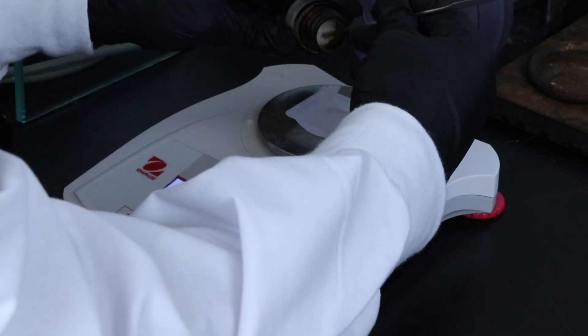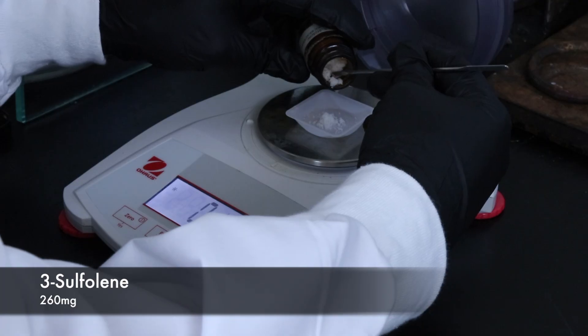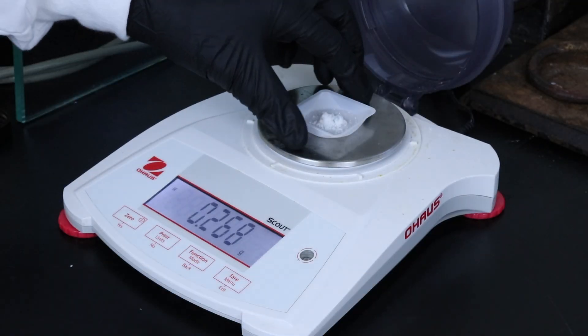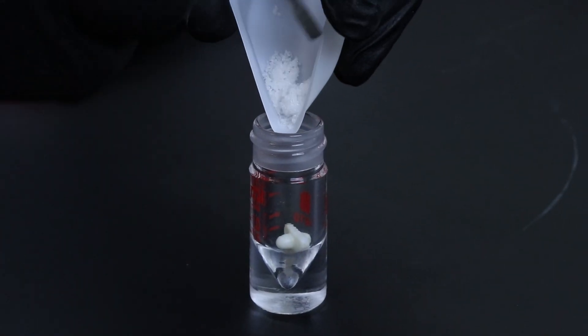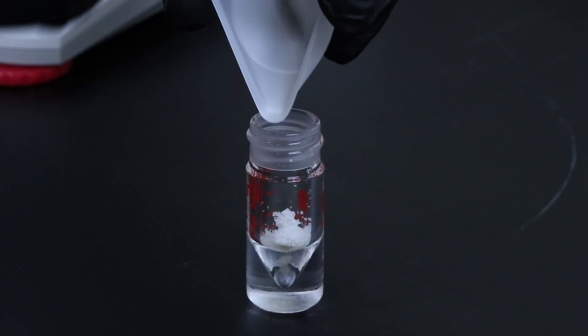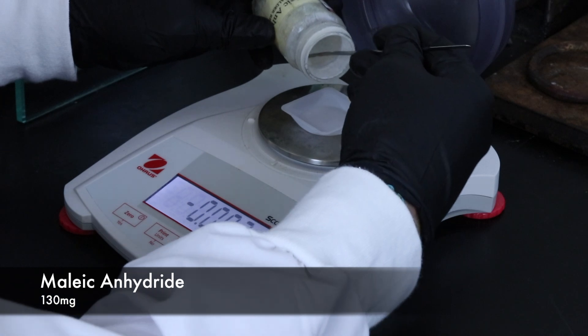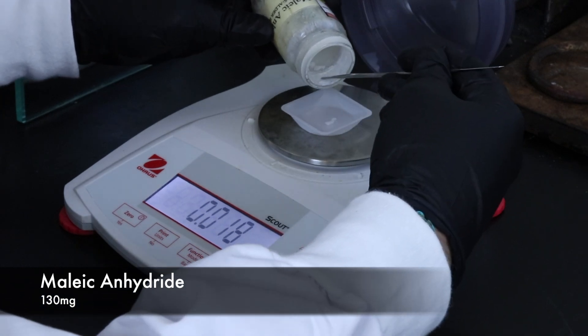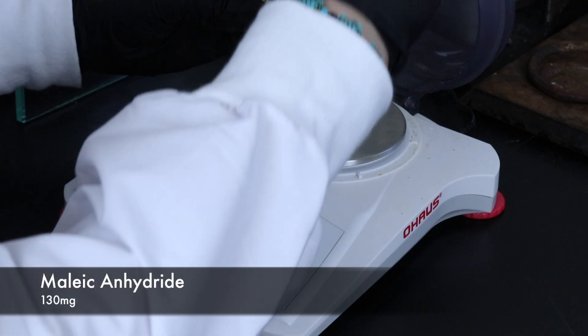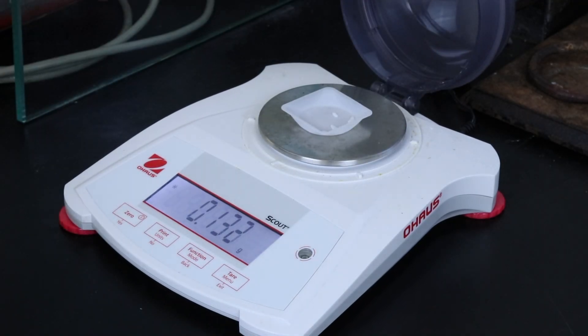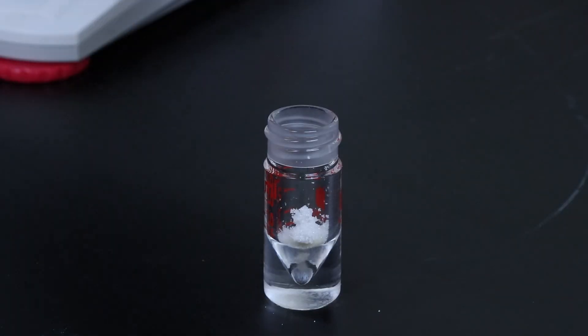I'll start by adding all of the reagents. So I'll measure about 260 milligrams of 3-sulfolene and add that to a 3 milliliter conical vial with a large spin vane. Then I can weigh out 130 milligrams of the maleic anhydride which was a little clumpy so it was kind of hard to get out, but I eventually got there and then I can add that to the conical vial as well.